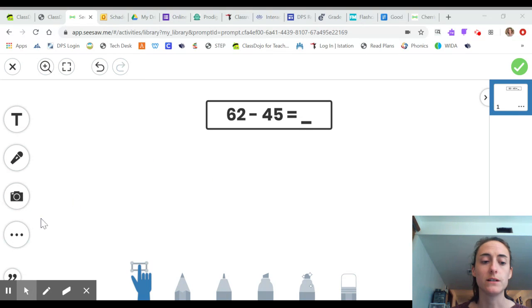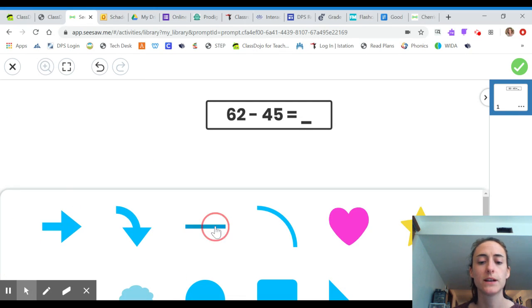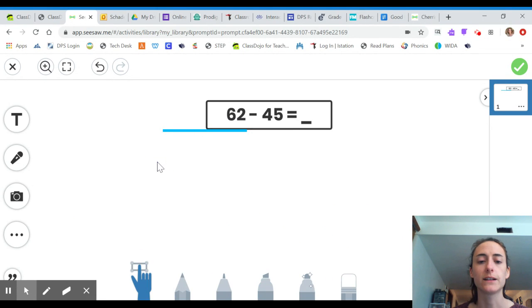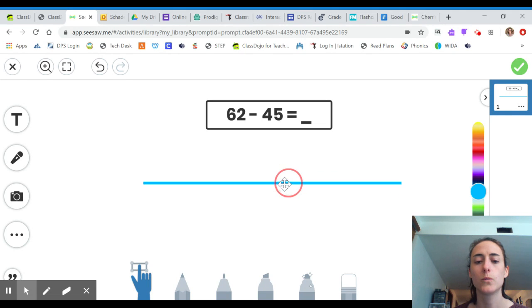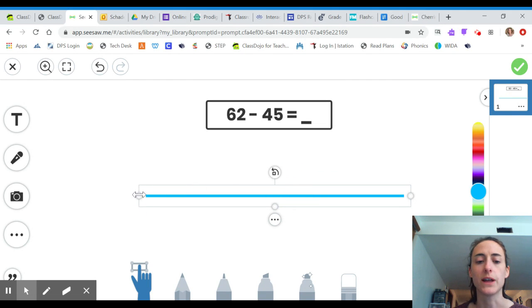So when we want to create a number line on Seesaw, we come down here, we can click shapes, grab this line, and then click outside of the shapes, pull the line for a nice long way so we have a nice long number line to work with.